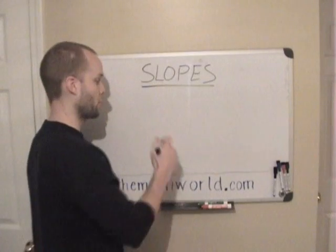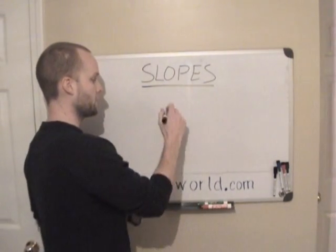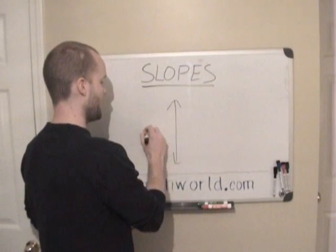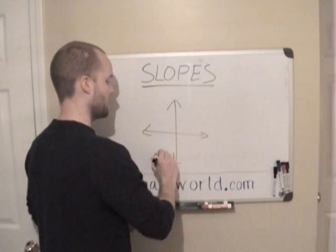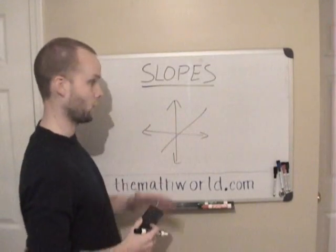So the first thing we're going to take a look at is linear equations. Linear equations just means a straight line on a graph. So the first thing you want to know is what is a slope. A slope just means the steepness of a line, how steep it is, one way or the other.